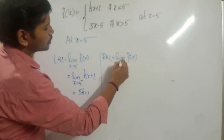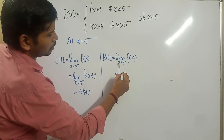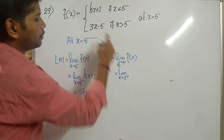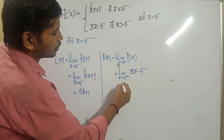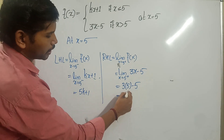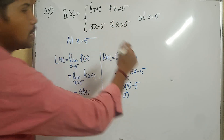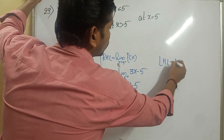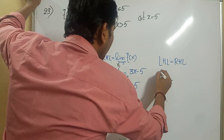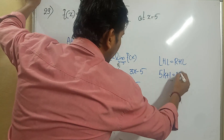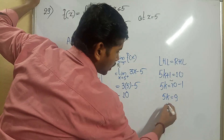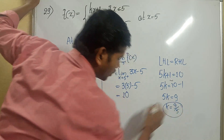For RHL: limit of f(x) as x tends to 5 plus. 5 plus means greater than 5, so the function is 3x - 5. Substituting x = 5: 3×5 - 5 = 15 - 5 = 10. Since the function is continuous at x = 5, LHL must equal RHL: 5k + 1 = 10, so 5k = 9, and k = 9 by 5.